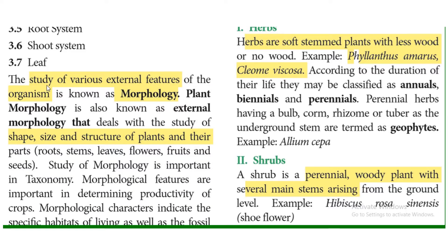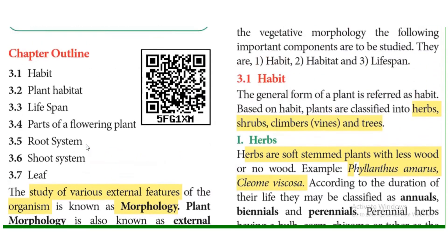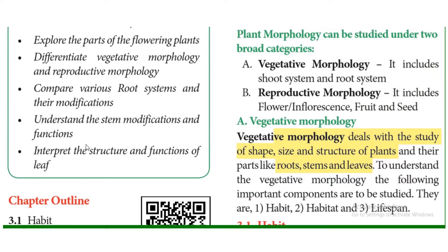In this video, we will discuss vegetative morphology of the plant. Morphology is the study of various external features of an organism. Plant morphology, also known as external morphology, deals with the study of shape, size, and structure of plants and their parts. Plant morphology is divided into two types: vegetative morphology and reproductive morphology.